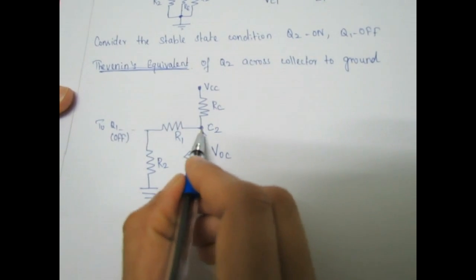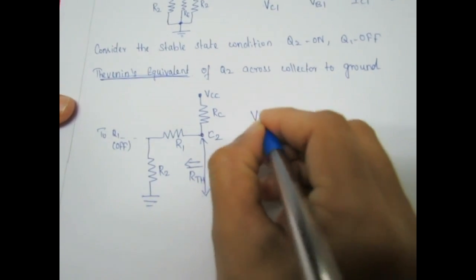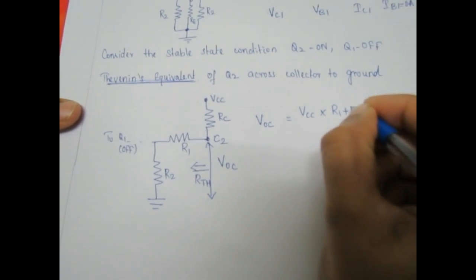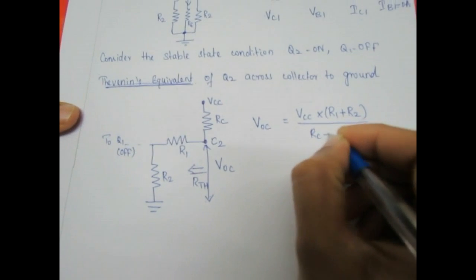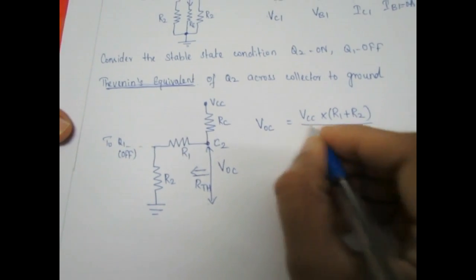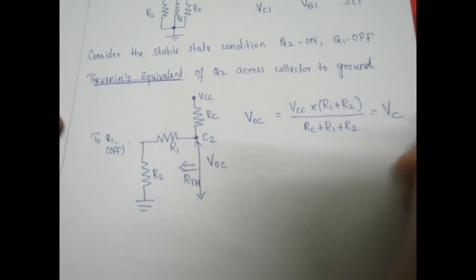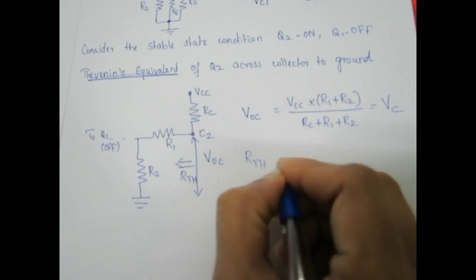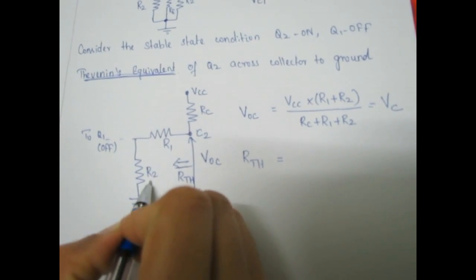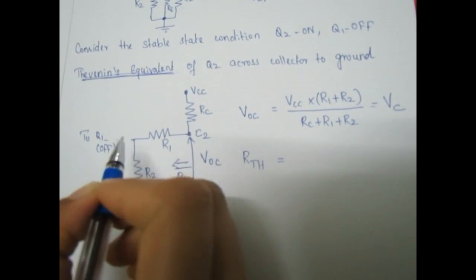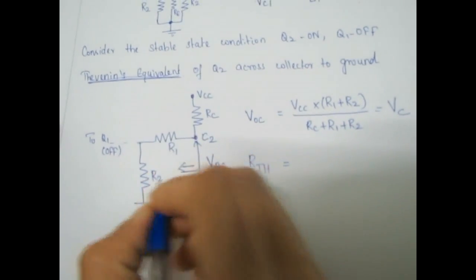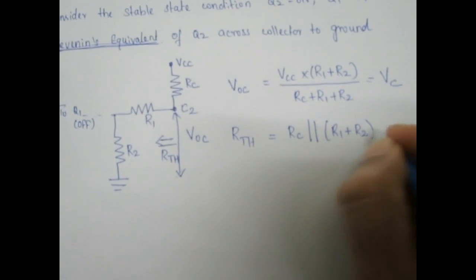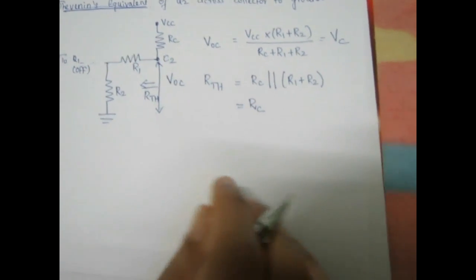When we draw the Thevenin equivalent from collector to ground, the open-circuit voltage Voc is equal to Vcc multiplied by (R1 + R2) divided by (RC + R1 + R2). This gives the voltage from the collector terminal of Q2 to ground. The Thevenin resistance R_thevenin equals RC parallel with (R1 + R2). Since Q1 is OFF and Ib1 = 0, whatever current flows through R1 also flows through R2, so R_thevenin simplifies to approximately RC.